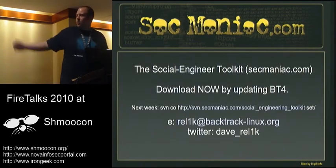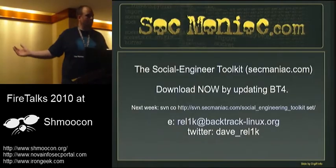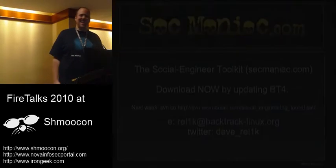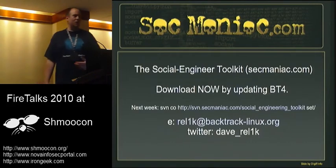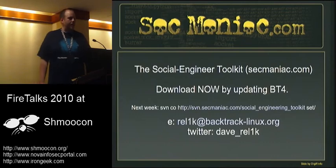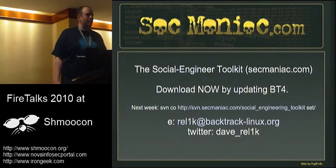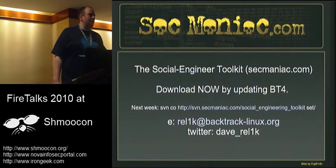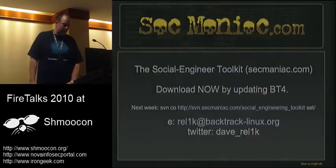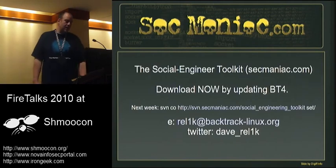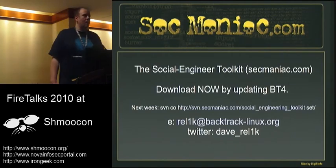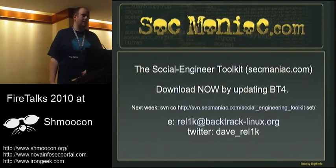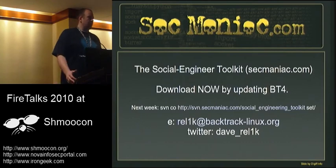You can download it right now by updating Backtrack 4. The new website is secmaniac.com — not sacmaniac.com. Next week you'll be able to SVN check it out: SVN co svn.secmaniac.com/social-engineering-toolkit. That will get you the latest and greatest for SET 0.4, and you'll also be able to download it from the download link on secmaniac.com. I appreciate your time, guys — thanks.